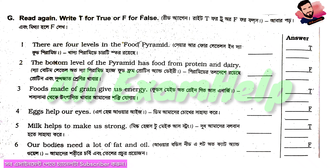Write T for true and F for false. Write them in your exercise.